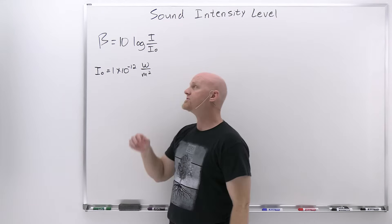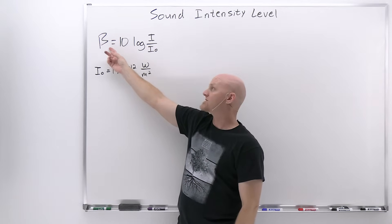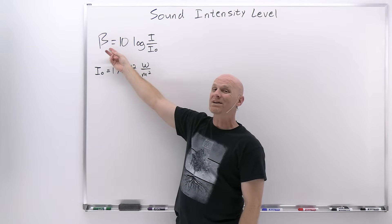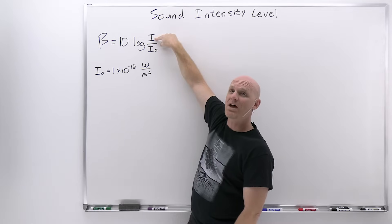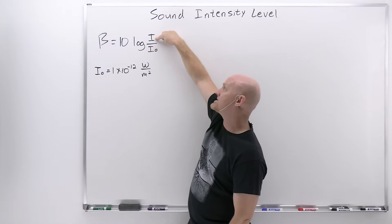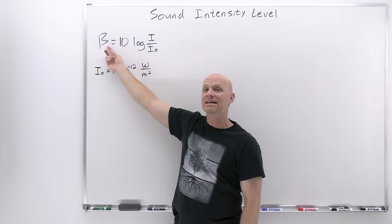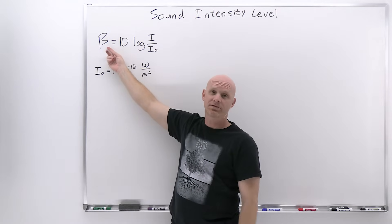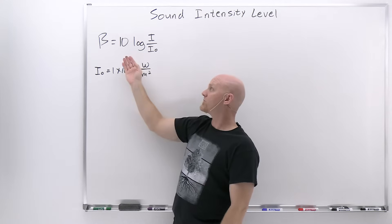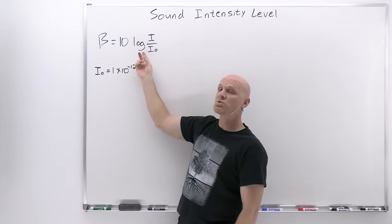Let's take a quick look at the equation for sound intensity level beta. Beta is the sound intensity level, and I wanted to distinguish that from I, which is just the plain old sound intensity. The sound intensity is measured in watts per meter squared, but the sound intensity level beta is measured in decibels — that's why we sometimes also call it the decibel level. Notice there's a logarithmic relationship between the two.